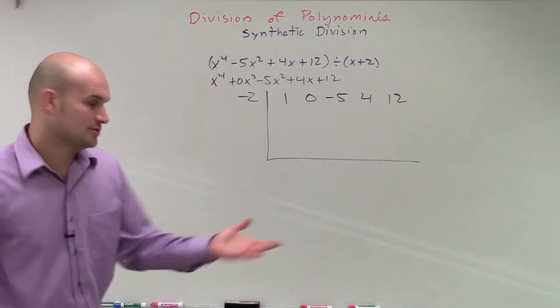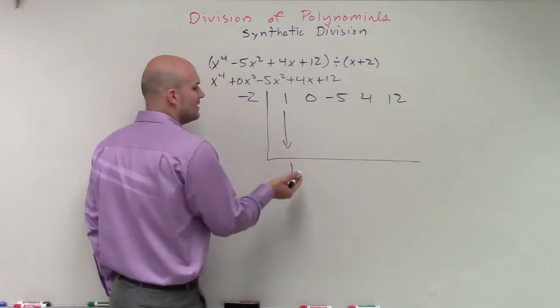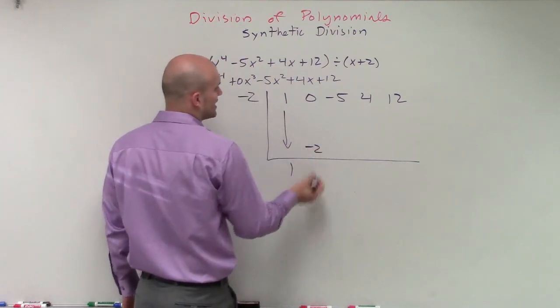So now let's go through the process. Again, the first one is the easy one. We'll bring that down, which is a 1. Then we always multiply diagonally, add vertically. 1 times negative 2 is negative 2.